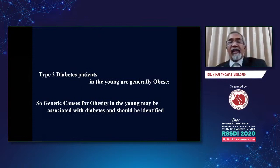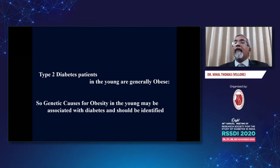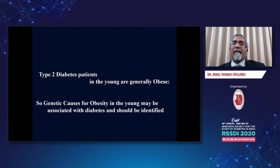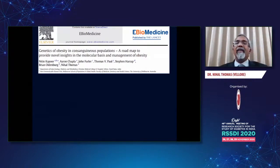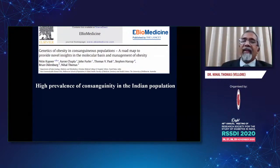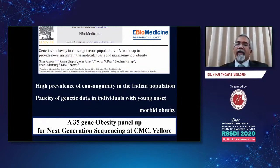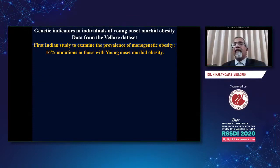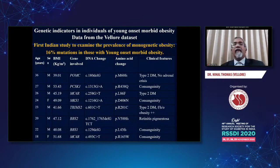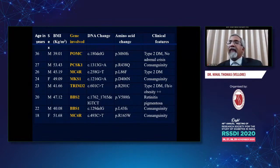Type 2 diabetes patients in the young are generally obese, so genetic causes for obesity in the young may be associated with diabetes and should be identified. Young people with obesity presenting with diabetes may have something else as a cause — the obesity is the dominant condition. Because of the high prevalence of consanguinity and the paucity of genetic data in our morbidly obese individuals, our group has looked at this more recently with a 35-gene obesity panel and found that monogenic obesity can be seen in 16% of mutations with young-onset obesity. On the right-hand side you can see typical associated syndromes: retinitis pigmentosa, mentally challenged state, with consanguinity very often present.